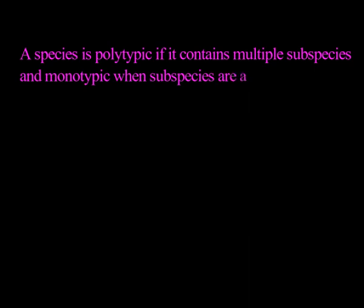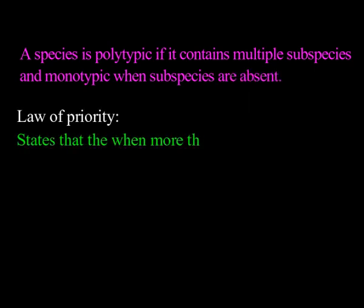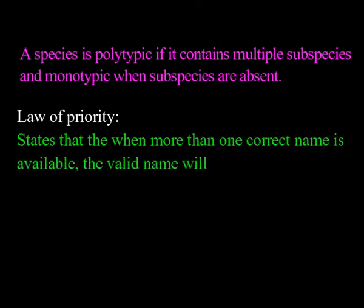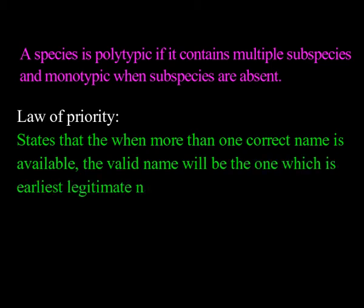A species is polytypic if it contains multiple subspecies and monotypic when subspecies are absent. The law of priority states that when more than one correct name is available, the valid name will be the earliest legitimate name at the same rank.